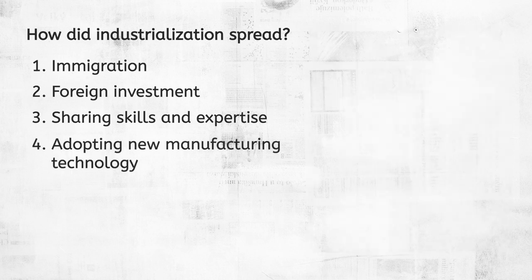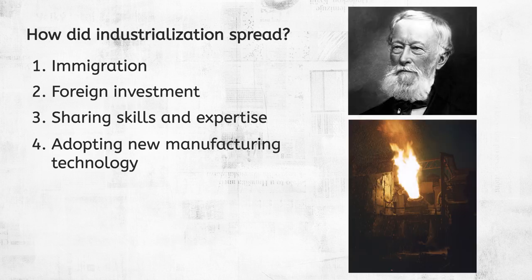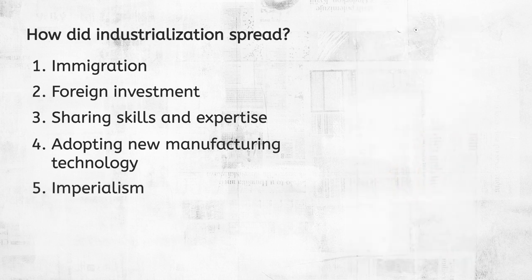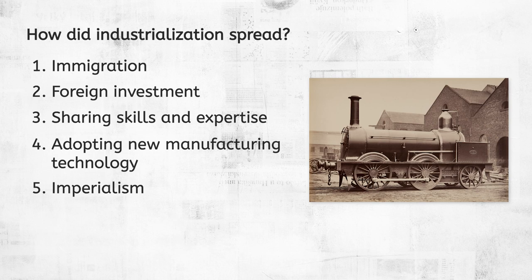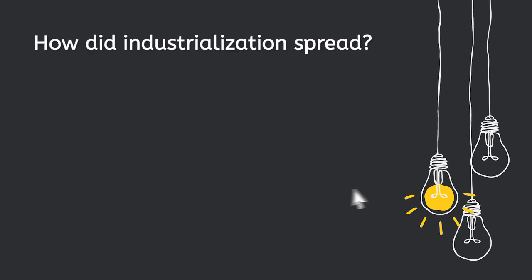Number four is adopting new manufacturing technology. In the 1850s, German industrialist and steel manufacturer Alfred Krupp introduced the British Bessemer furnace, a new tool for mass-producing steel, to Germany. Ultimately, Germany became the dominant force in steel manufacturing in Europe. And number five, imperialism. Imperial powers spread industrialization to their colonies. For example, Britain established railroads in India, and American sugar companies established plantations to grow and process sugarcane in Hawaii. Let's pause here and answer guiding question two: How did industrialization spread?